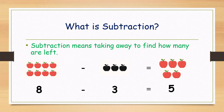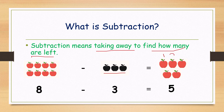First, what is subtraction? Subtraction means taking away and finding how many are left. Here we are taking eight apples. How many take away? Three. Then how many are left? Let's count. One, two, three, four and five. See? What is eight minus three? Five.